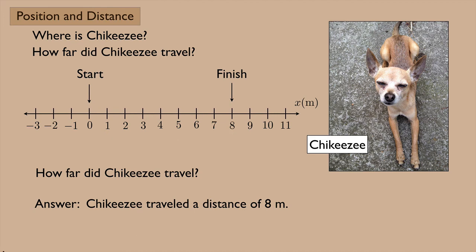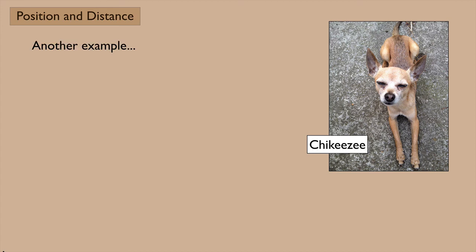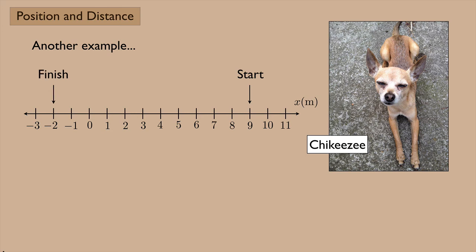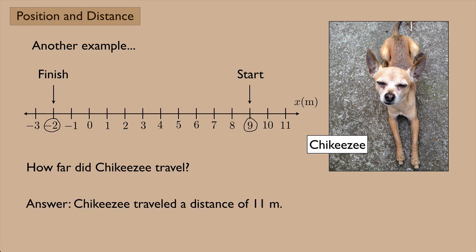How about another example? What if Chiquisi started over here at nine and finished all the way over here at negative two? Now how far did Chiquisi travel? We would do the same thing. We would count starting at the nine right here and count all the way over to the negative two and see how many meters that would be. In this case, if you count, you see that Chiquisi traveled a distance of eleven meters.